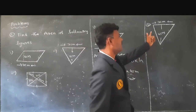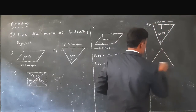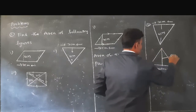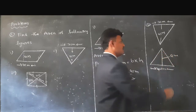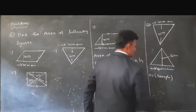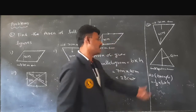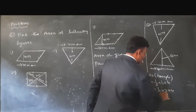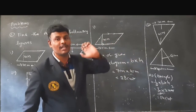The second figure is a triangle. The base of the given triangle is 7 cm and the height is 4 cm. The formula to find the area of a triangle is half into base into height. So, half into 7 into 4 equals 14 cm square. The area of the given triangle is 14 cm square.